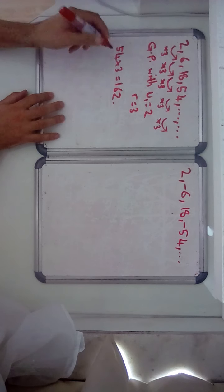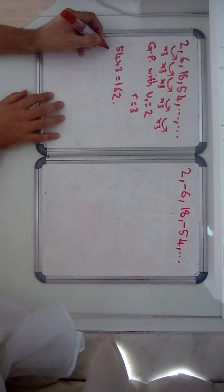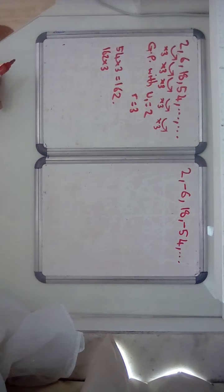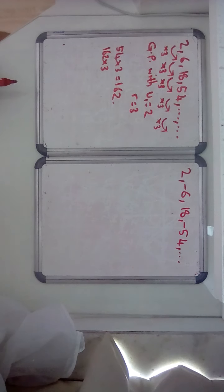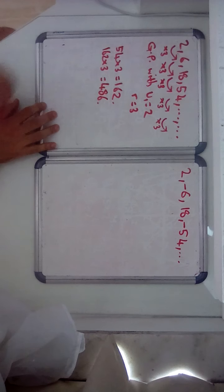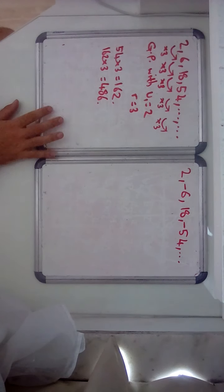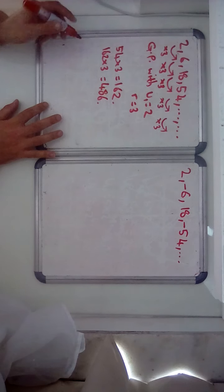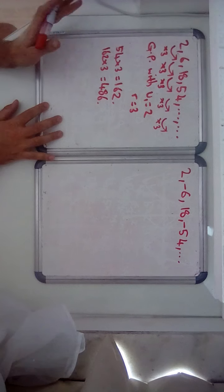And the next term after that is going to be 162 times 3. Well, 3 times 16 is 48, so 360 must be 480, 3 times 2 is 6, I recognize 486. Right, that's the next two terms out of the way.